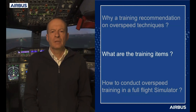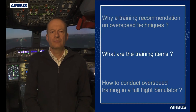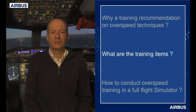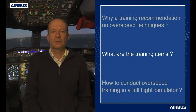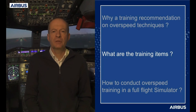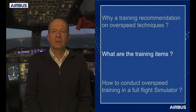Let's now see what training items are contained in the overspeed training recommendations. The first training items focus on the reinforcement of knowledge. One training objective is to review the conditions prone to the occurrence of overspeed. As an example, a late initiation of the descent beyond the computed top of descent reduces the margin versus an overspeed situation.